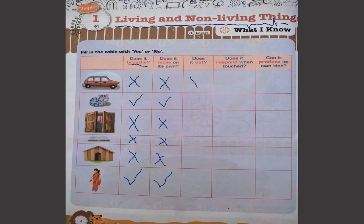Next question: does it eat? Car does not eat, so we put a cross mark. Cat can eat. Window, book, and house do not eat. A lady eats, so we put a tick mark. Next: does it respond when touched? Car does not respond, cat responds, window and book do not respond, and a lady responds.